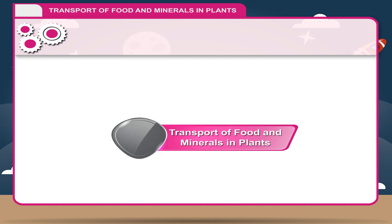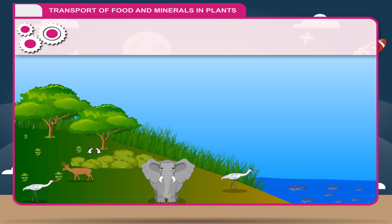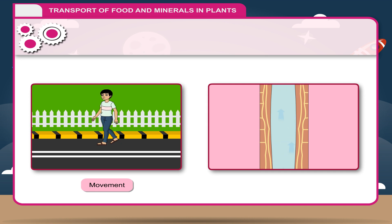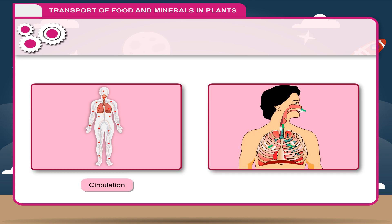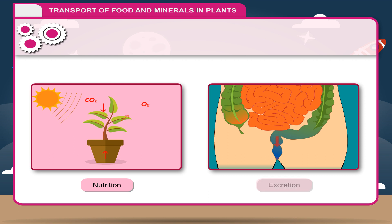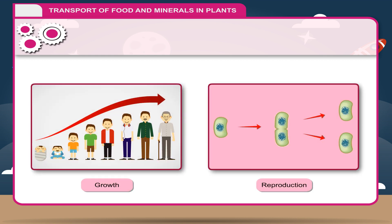Transport of food and minerals in plants. All living organisms perform various vital activities to survive such as movement, transportation, circulation, respiration, nutrition, excretion, growth and reproduction. All these activities are collectively called life processes.